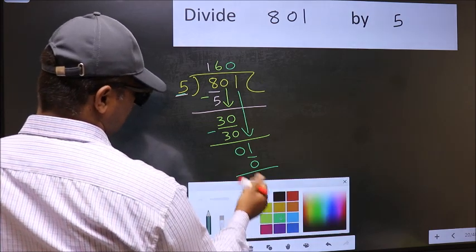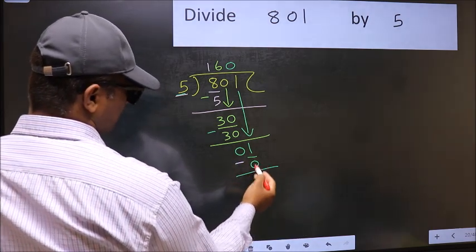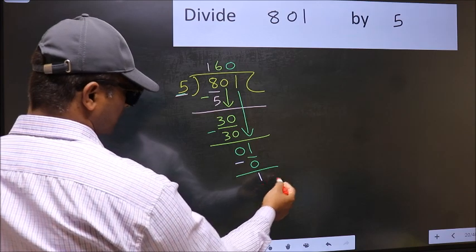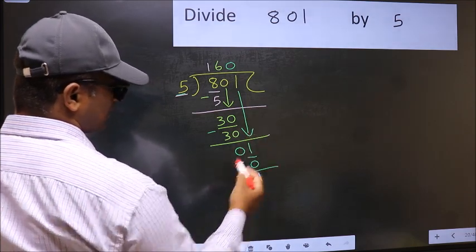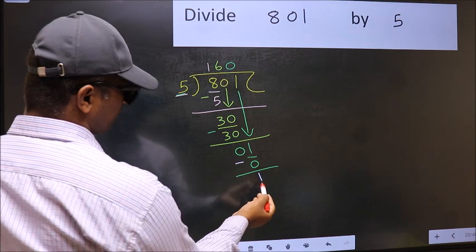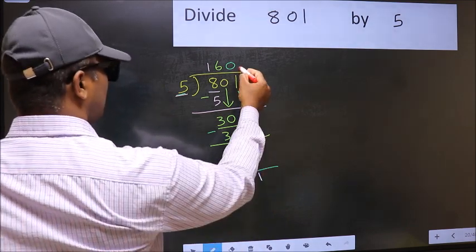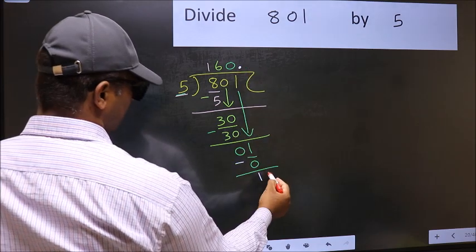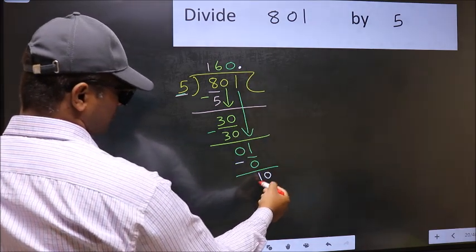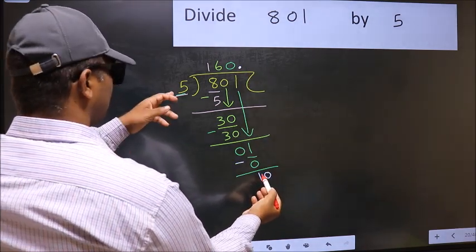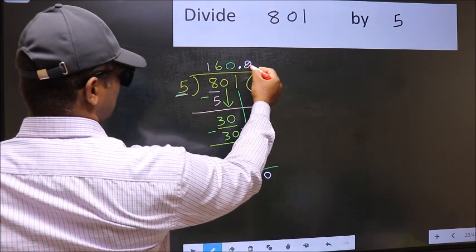Now you should subtract. 1 minus 0, 1. Over here, we did not bring any number down. And 1 is smaller than 5. So now you can put dot and take 0. So 10. When do we get 10 in 5 table? 5 to 10.